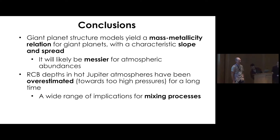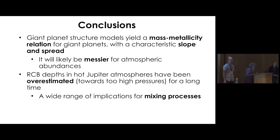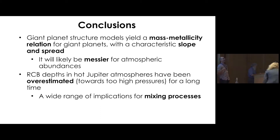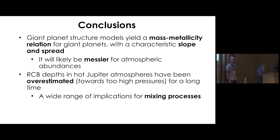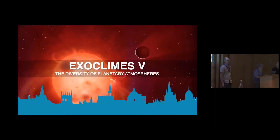Q: Hilke Schlichting, UCLA: Does the shallower radiative-convective boundary help explain the inflated hot Jupiters because it makes it easier to heat the interior? A: Yes — any inflated object, regardless of mechanism, has to have a shallower radiative-convective boundary. It might make mechanisms like ohmic dissipation easier, because you don't need to get energy down really deep. That's something we're thinking about further in the next year.